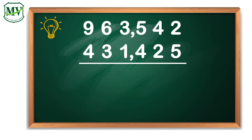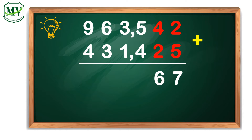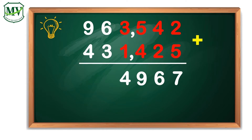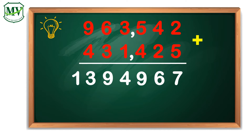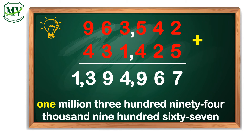Let's add these numbers starting in the ones place. We have 2 plus 5 equals 7. In tens place, 4 plus 2 equals 6. In hundreds place, 5 plus 4 equals 9. In thousands place, 3 plus 1 equals 4. In ten thousands place, 6 plus 3 equals 9. In hundred thousands place, 9 plus 4 equals 13. We read the answer as 1,394,967.